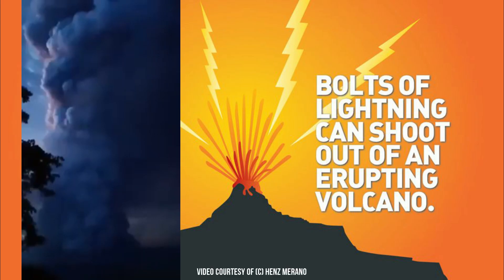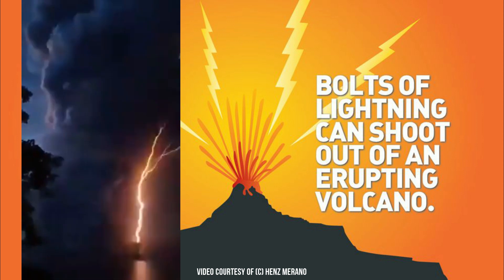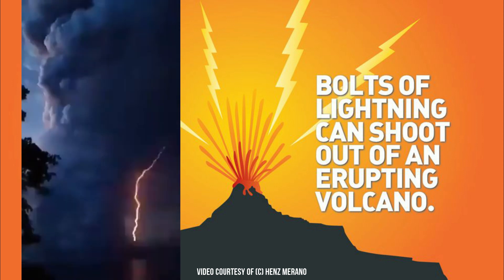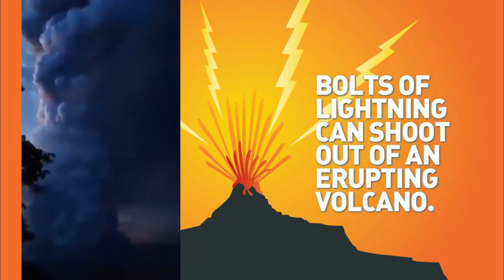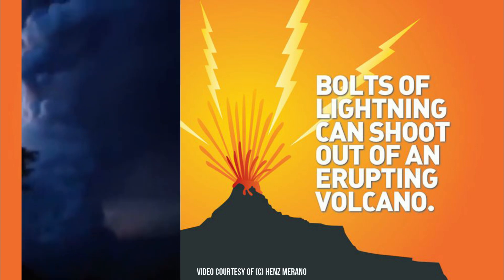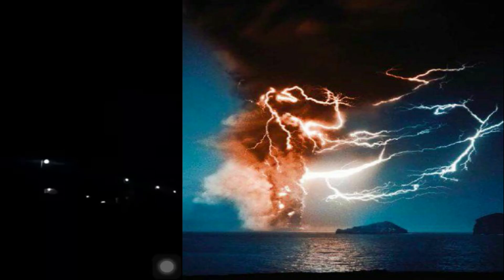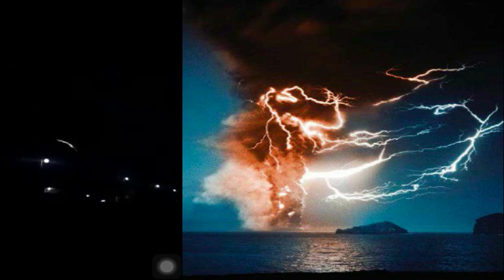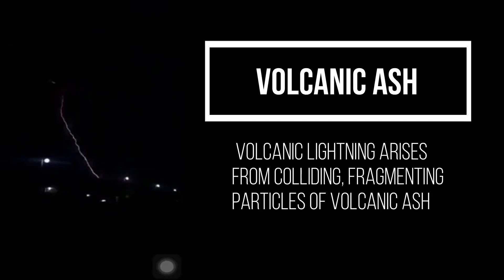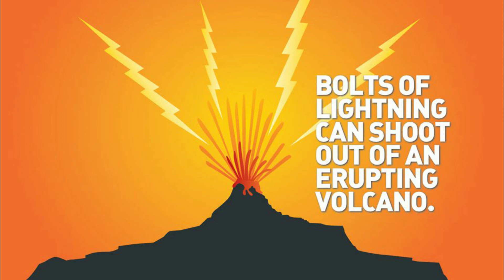Volcanic lightning is an electrical discharge caused by a volcanic eruption, rather than from an ordinary thunderstorm. Volcanic lightning arises from colliding, fragmenting particles of volcanic ash, and sometimes ice, which generates static electricity within the volcanic plume.